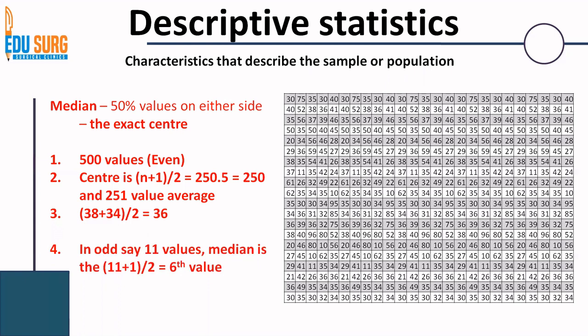It's very easy to understand — you are finding the exact center. If you have an odd number, say 11, you want 5 on one side and 5 on the other, so the 6th value is your median. If you have 500 values, you know that the 250th alone cannot be the center because then 249 would be on one side and 251 on the other. So you take the 250th and 251st and average them so you are exactly at the center. That is how median is calculated.